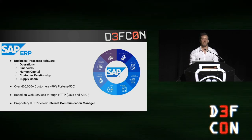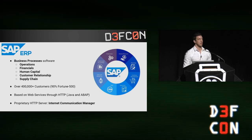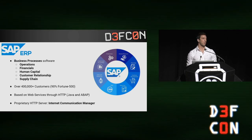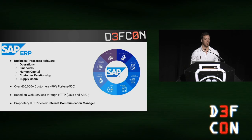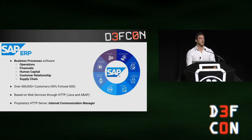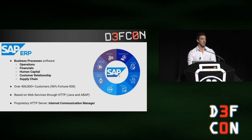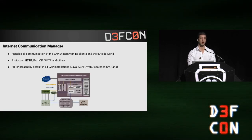To do so, they provide many modules based on web services accessible through HTTP. This is true for both Java and ABAP, and also for S/4HANA and the cloud. To expose these services, they use the same proprietary HTTP server across all their products, which is called the Internet Communication Manager, or ICM.